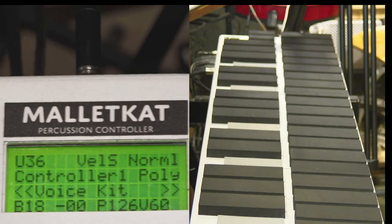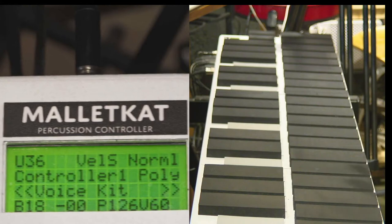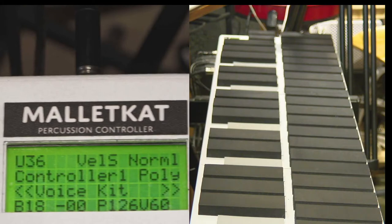On the MalletCat, the foot controllers are normally used for doing continuous controller things like volume or pitch bend or modulation, but some folks like to use a foot switch to change kits.